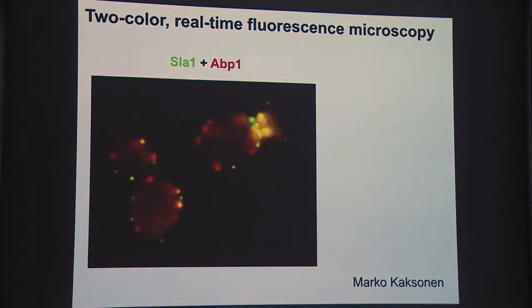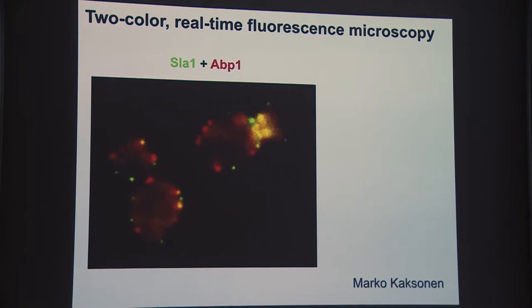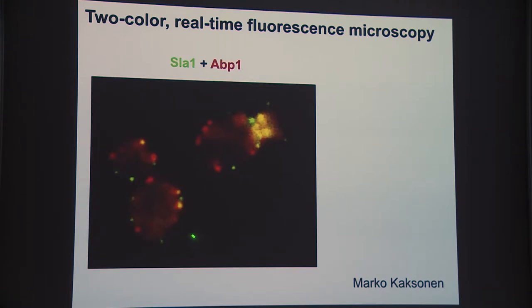Other people had started to look at these proteins in static images of cells. A paper was published, for example, that looked at actin—the red is a surrogate for actin—and an endocytic protein in green, and concluded that for the most part they were present in different structures in a yeast cell. Occasionally you would see yellow, meaning the two proteins were together, but with a low level of coincidence it was hard to know what to make of that. The real significance of this interaction comes when you do two-color live cell imaging.